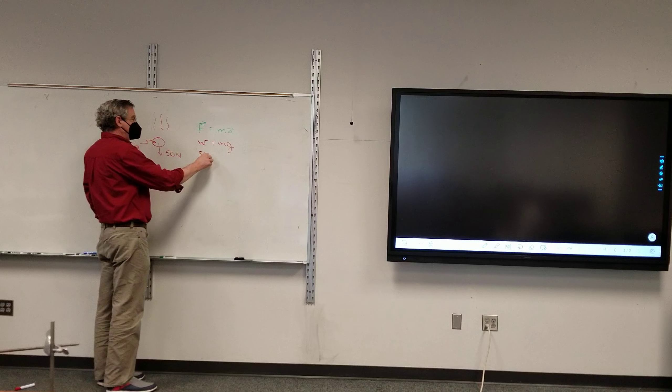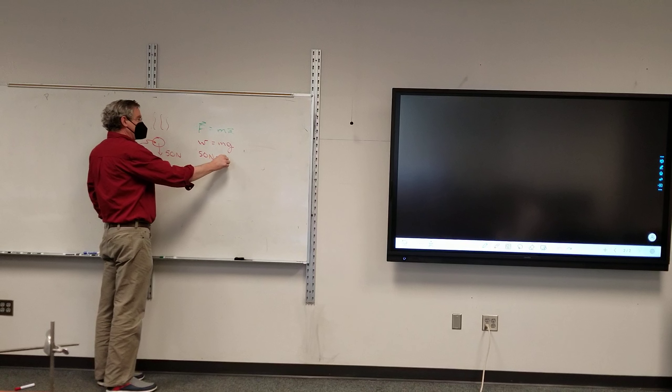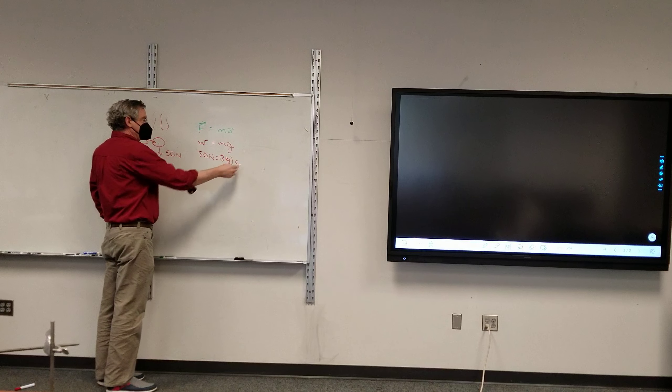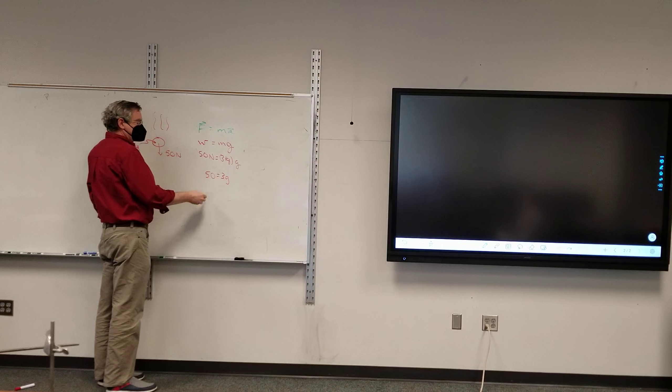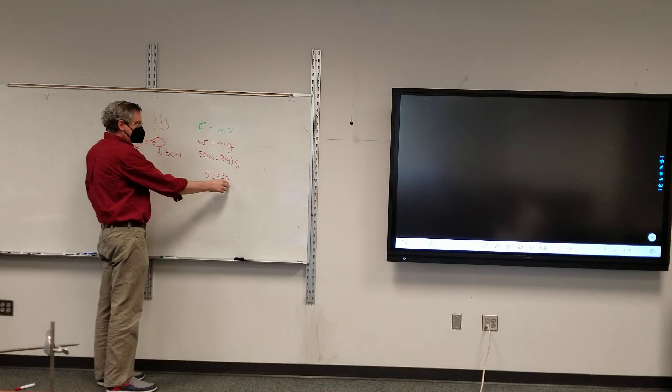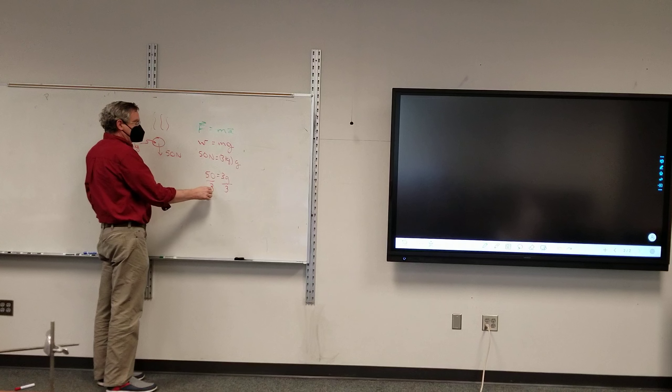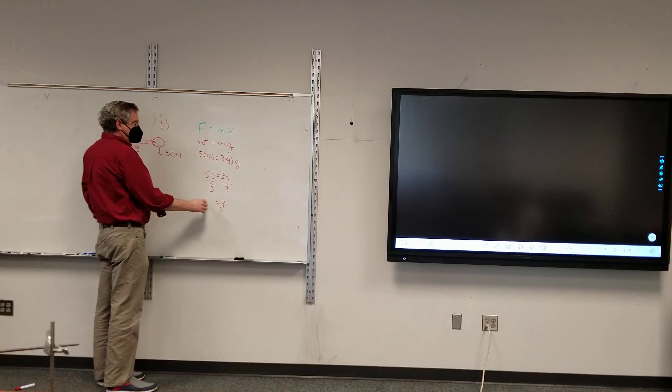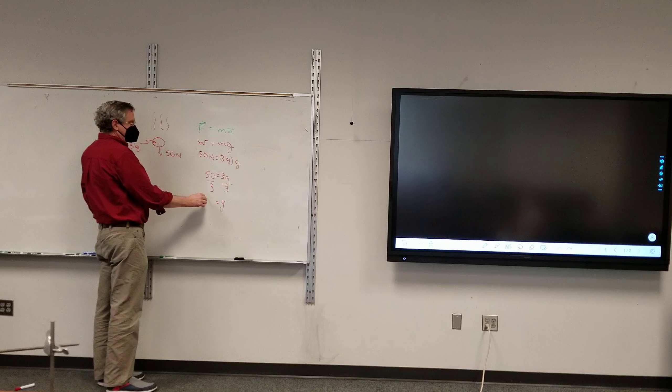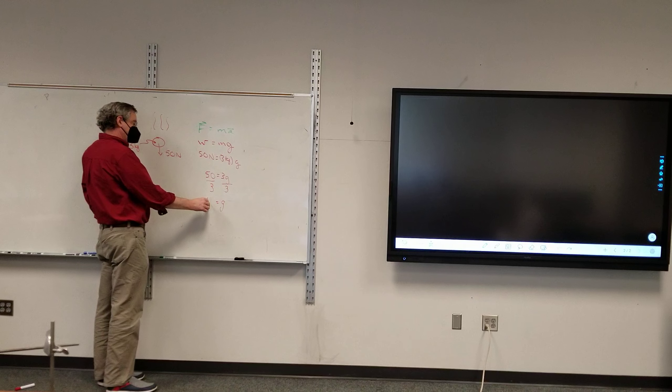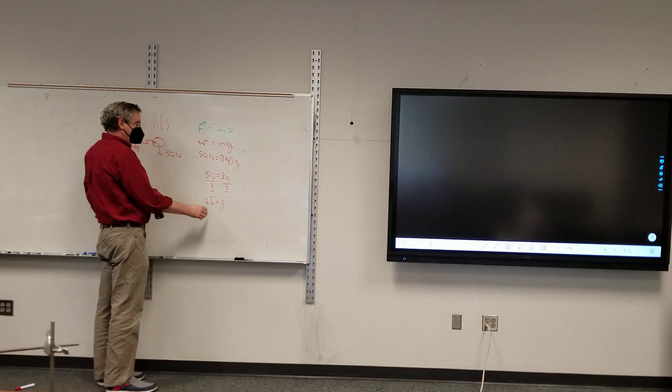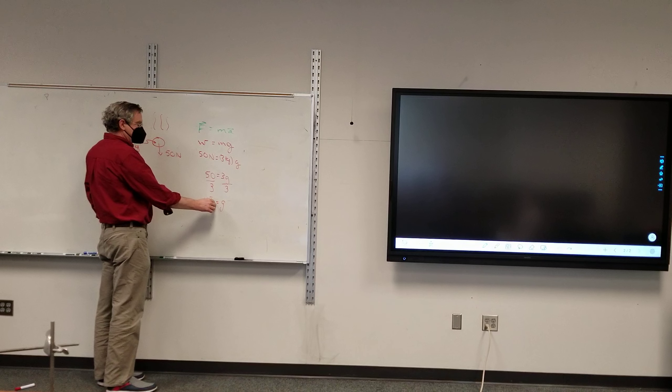In this particular example, this would not be on Earth because I've got other values here. If that's 50 newtons equals 3 kilograms times G, the math problem is 50 equals 3G. Solve for G. 50 by 3, 16.6 repeating meters per second squared.